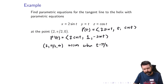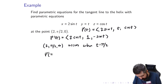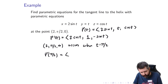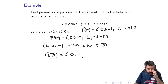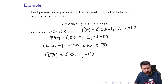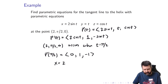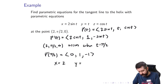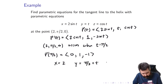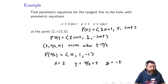We need r'(π/2): 2 cos(π/2) = 0, the y component is always 1, and -sin(π/2) = -1. So r'(π/2) = ⟨0, 1, -1⟩. The parametric equations for the tangent line are: x = 2 + 0t, y = π/2 + t, z = 0 + (-1)t = -t. That's it — the tangent line passes through the point (2, π/2, 0) and is parallel to the tangent vector ⟨0, 1, -1⟩.